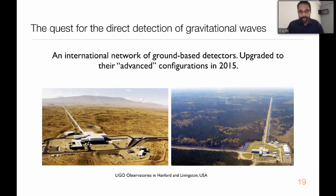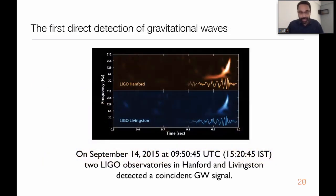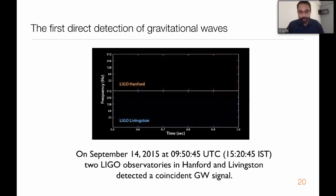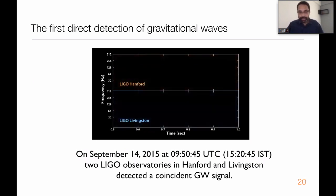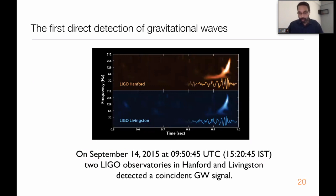In the last few years they upgraded to so-called advanced configurations, which means sensitivities about a factor of 10 better than their previous generation counterparts. As soon as the advanced LIGO detectors started operating, they detected the first gravitational wave signal. This happened on 14th September 2015, and the first signal was produced by the merger of two massive black holes, each weighing about 30 times the mass of the Sun, colliding in a very distant galaxy about 1.3 billion light years away.